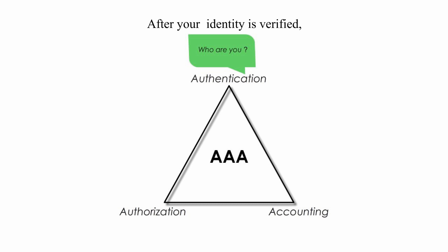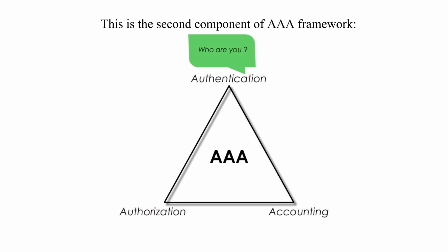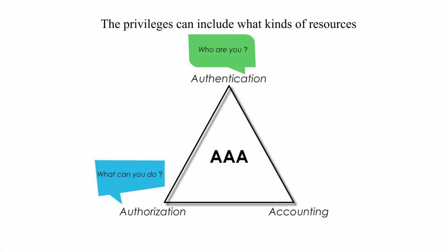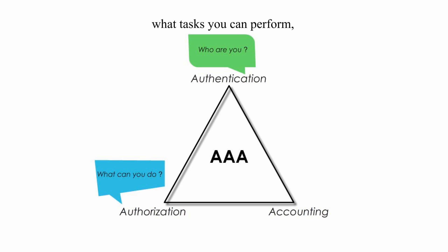After your identity is verified, you will be granted with some privileges, and this is the second component of AAA framework: Authorization. It is about what you can do. The privileges can include what kinds of resources or services you can access, what tasks you can perform, and how long you can use these resources.